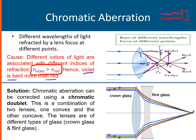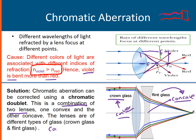A solution to chromatic aberration is a combination of two lenses: one convex and one concave. These lenses must be made of different materials — the convex lens can be made of crown glass and the concave lens made of flint glass. It is important that the index of refraction of the convex lens is much lesser compared to the index of refraction of the concave lens. This is how to fix chromatic aberration.